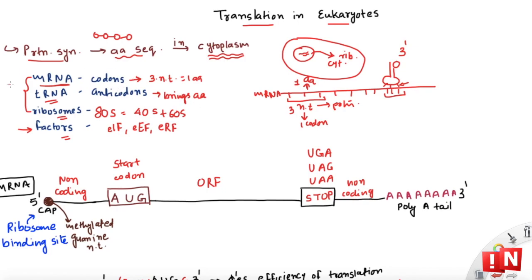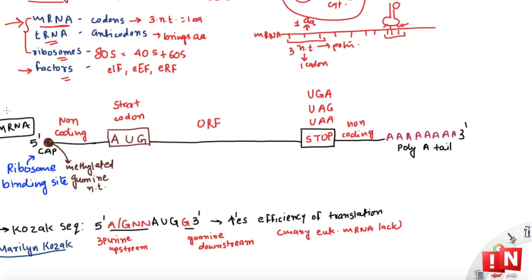The eukaryotic mRNA that gets translated has a 5' cap and a 3' poly-A tail. The 5' cap is a methylated guanine nucleotide at the 5' end, and it is recognized by the ribosome to attach itself. This 5' cap is followed by a short non-coding region that does not code for any protein.